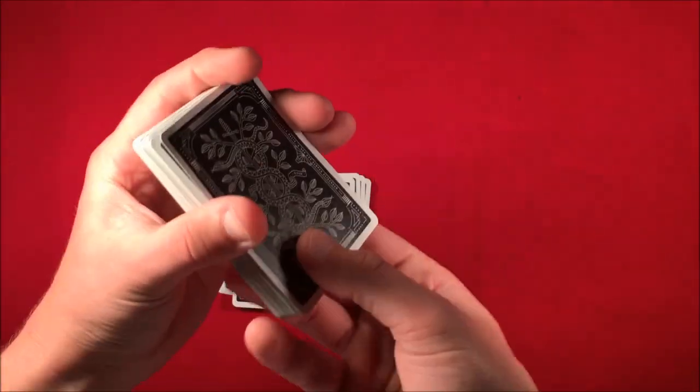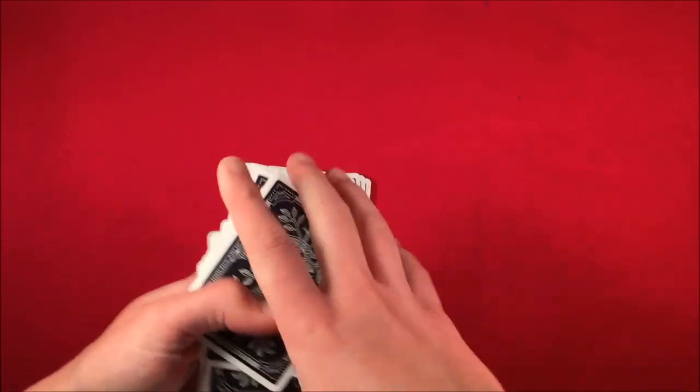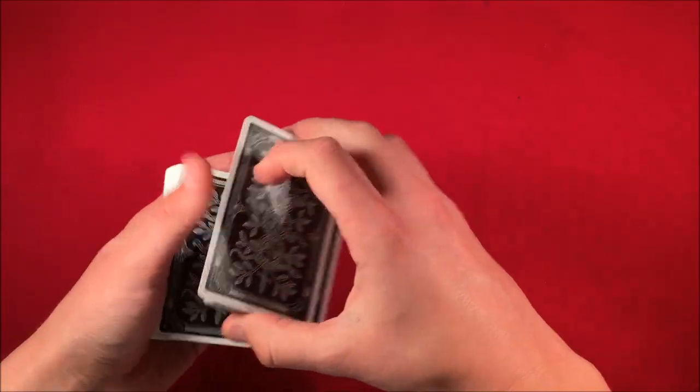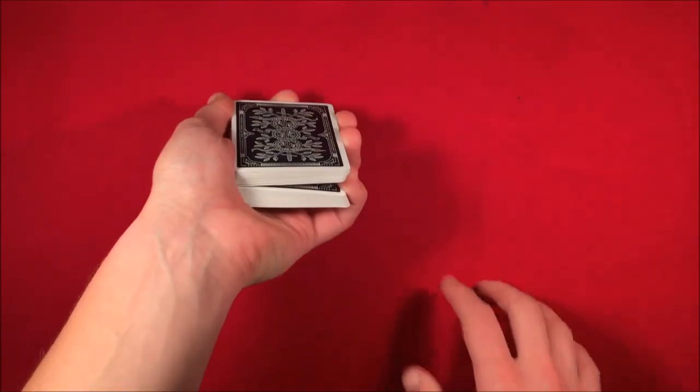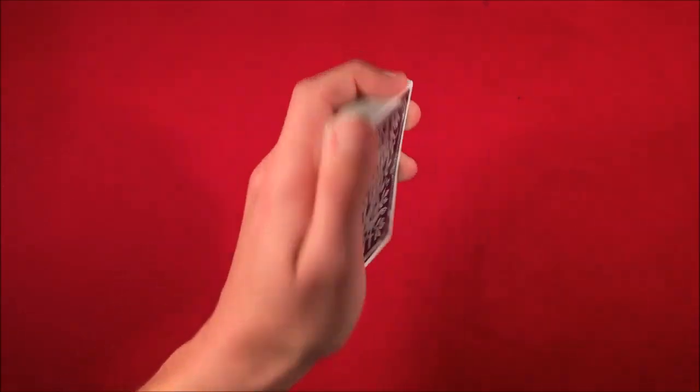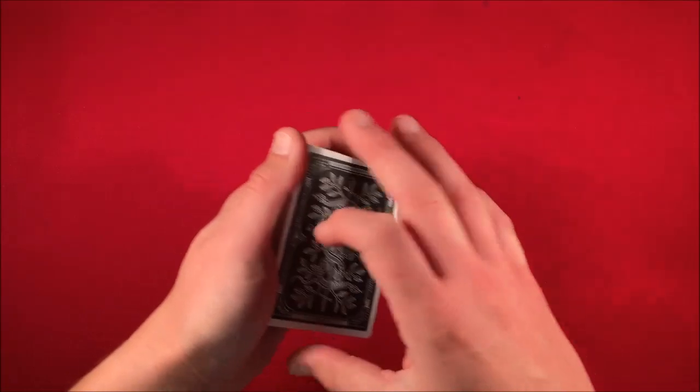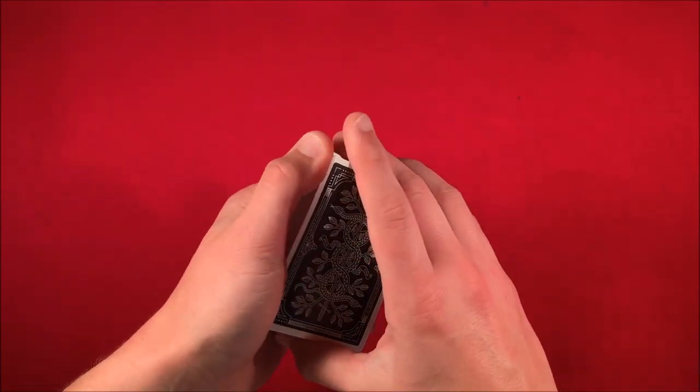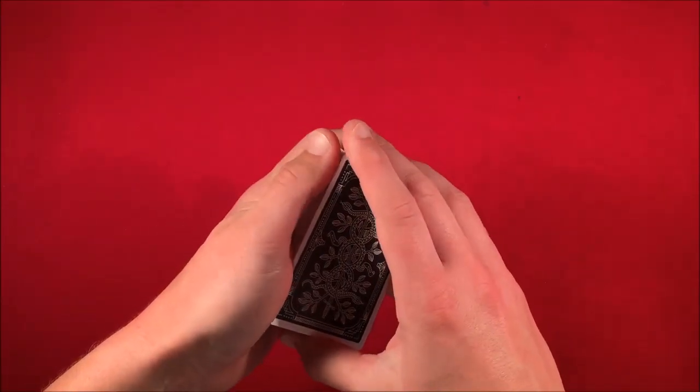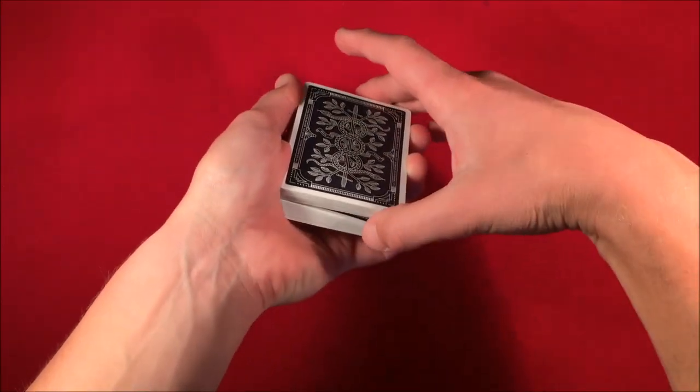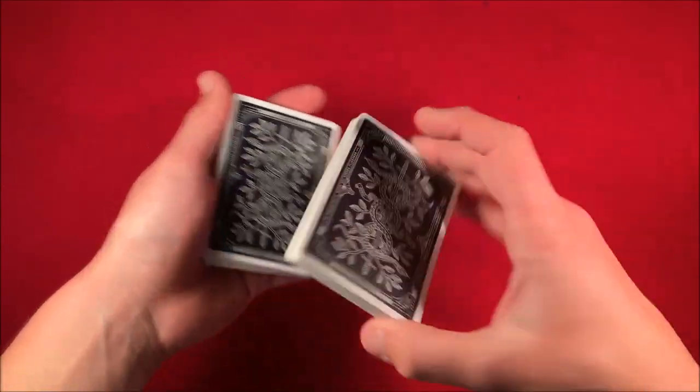So you take this 25-card packet, and all you do is you get a break right above it. So this way, you have 25 cards broken at the bottom, and the spectators can't see it. So all you have to do is tell the spectators to say stop whenever they like, and basically, you're just doing a riffle force. So wherever they say stop, you just take it from the break.